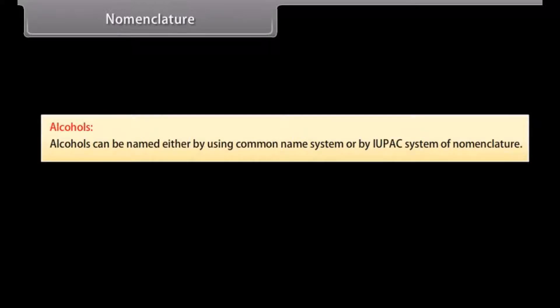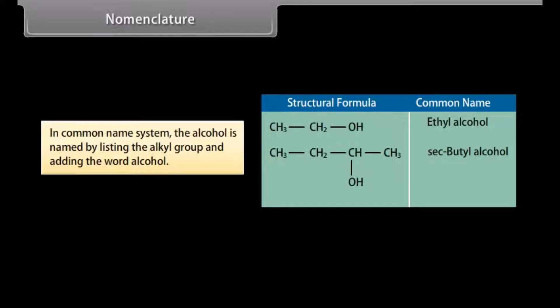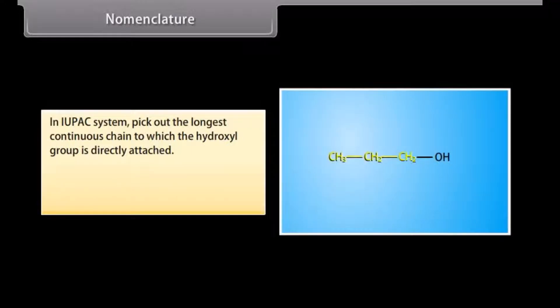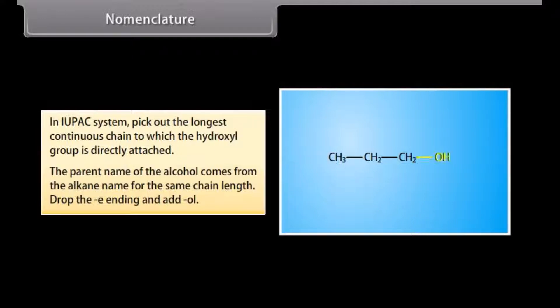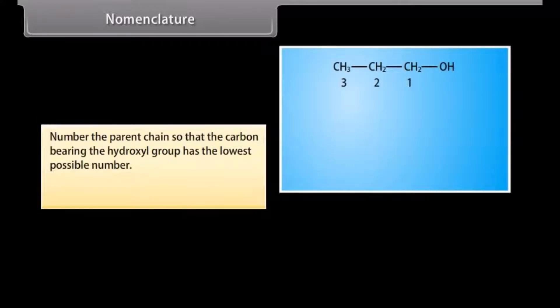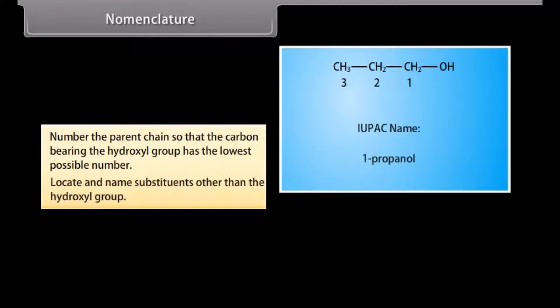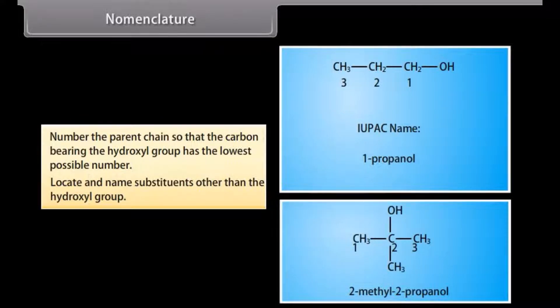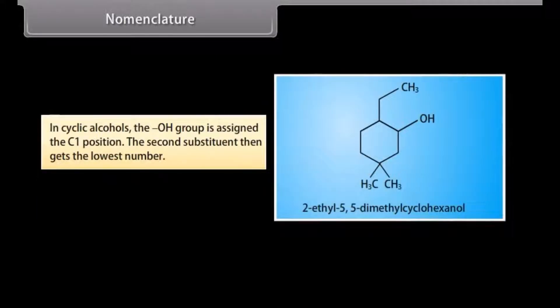Nomenclature of alcohols. Alcohols can be named either by the common name system or by the IUPAC system. In the common name system, the alcohol is named by listing the alkyl group and adding the word 'alcohol.' In the IUPAC system: pick the longest continuous chain to which the hydroxyl group is directly attached; drop the '-e' ending and add '-ol'; number the chain so the carbon bearing the hydroxyl group has the lowest possible number; locate and name other substituents. Example: 2-methyl-2-propanol. In cyclic alcohols, the hydroxyl group is assigned the C1 position, e.g., 2-ethyl-5,5-dimethylcyclohexanol.